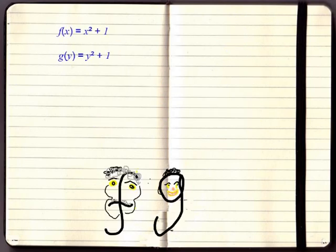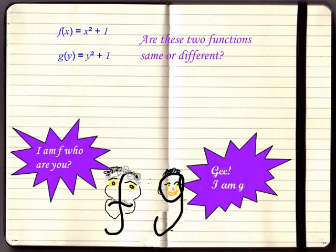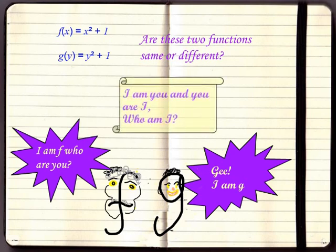Here are two functions: f(x) equal to x square plus 1, and g(y) is y square plus 1. Are these the same or different? For every x, f gives the same f(x) that g gives for g(y). So only the names f and g are different. The behaviors are identical.